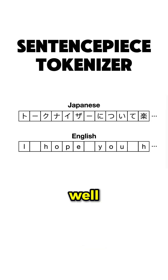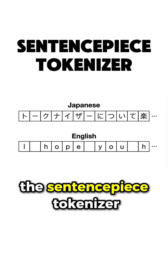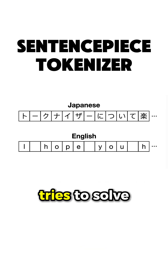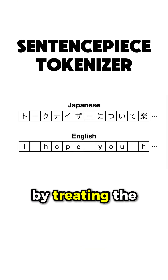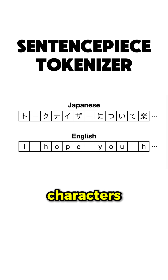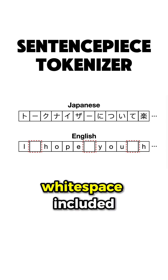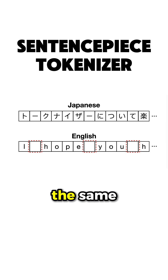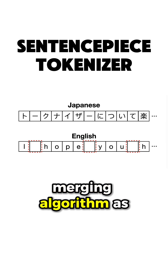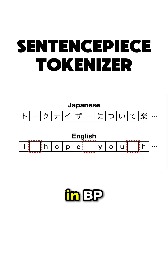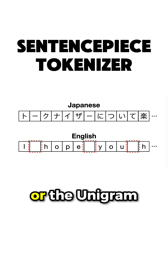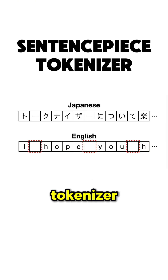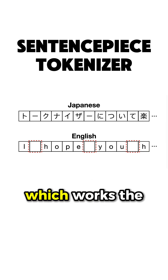Well, the SentencePiece tokenizer tries to solve this issue by treating the input text as a stream of characters, whitespace included, and it does that by employing the same merging algorithm as in BPE or the Unigram tokenizer,